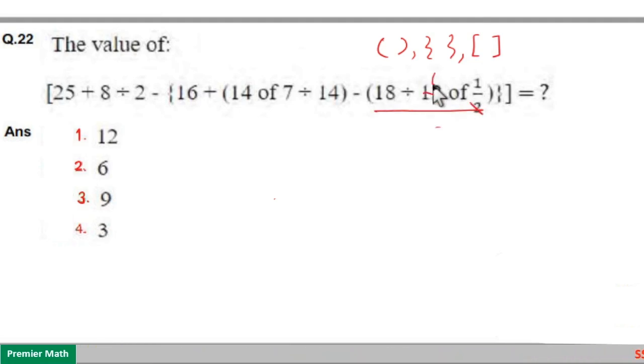Here 2 goes 6 times in 12, and 18 by 6 is equal to 3. So this will become 3. And here if you look at this, you have to solve this bracket second.